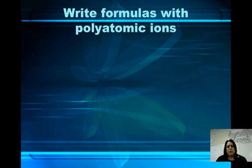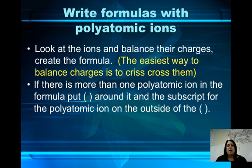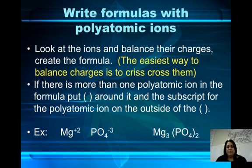Let's learn about writing formulas with polyatomic ions. You've got to look at the ions and balance their charges to create the formula. All formulas are electrically neutral. The easiest way to balance charges is to crisscross them. If there is more than one polyatomic ion in the formula, we want to put parentheses around it and the subscript for the polyatomic ion on the outside of the parentheses. For example, magnesium with a plus 2 charge and phosphate with a minus 3 charge. We put parentheses around the phosphate, crisscross the charges, and you'd end up with Mg3(PO4)2.